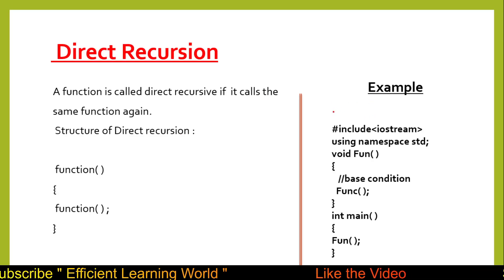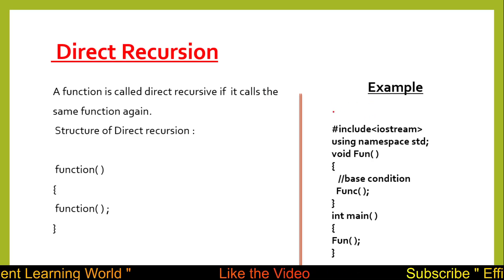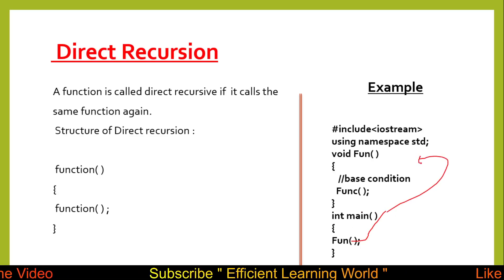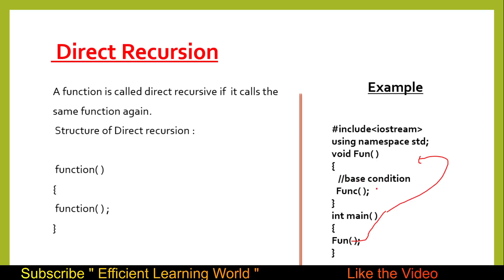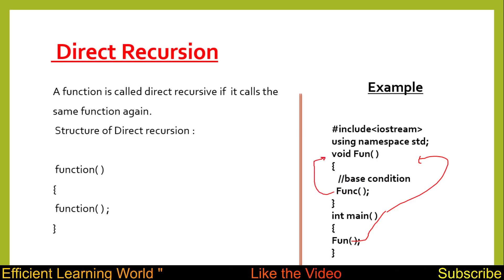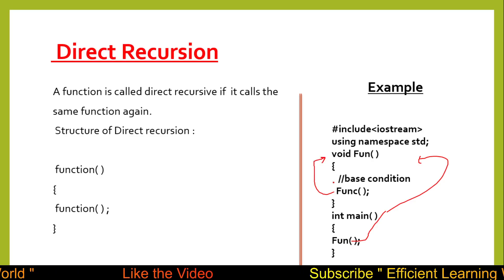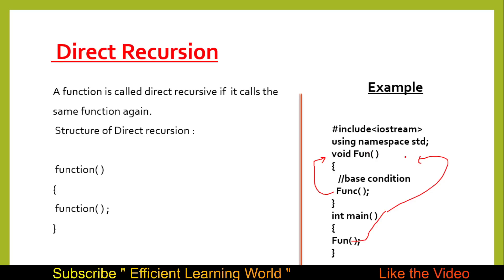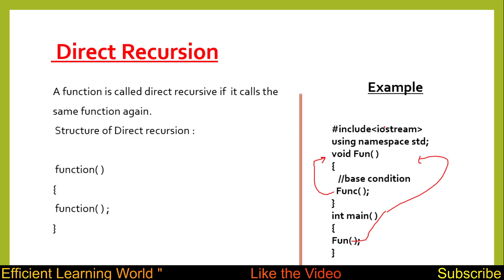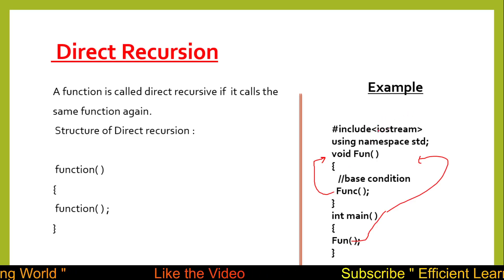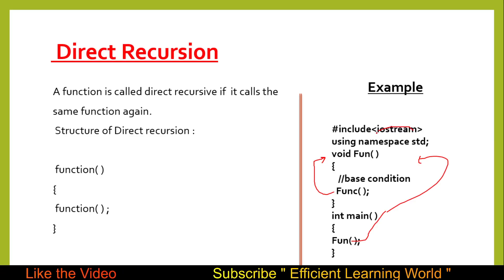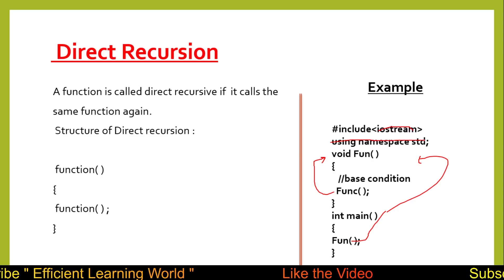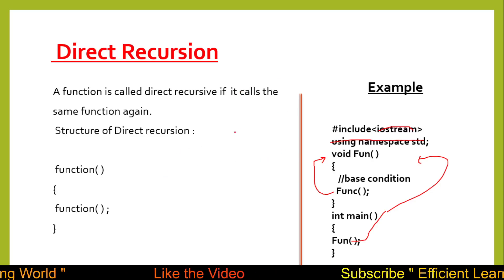Here is a short example in C++. In the main function I am calling that function, and in the body of that function I am calling it again and again until the base condition or termination condition becomes false. This is the direct recursion example in C++. The concept is the same in other languages like Python or C, but header files differ — for example, in C you use stdio.h instead of iostream, and the syntax structure differs slightly.